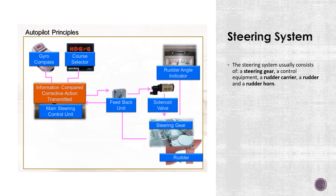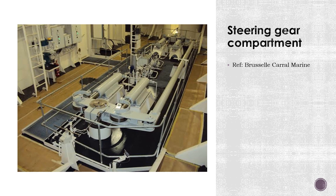The steering system is in constant use when the ship is underway, and any failure or malfunction may result in a disaster, accident, or similar close-quarter dangers. When thinking about the steering system, you must consider the steering gear compartment, which basically comprises the machinery spaces. Handrails, gratings, or other non-slip surfaces shall be arranged to ensure suitable working conditions in the event of any hydraulic fluid leakage.